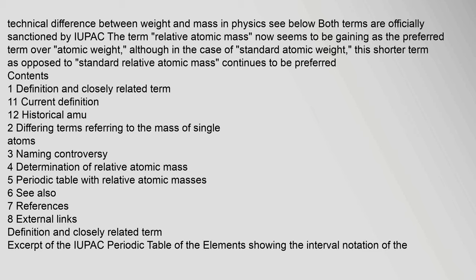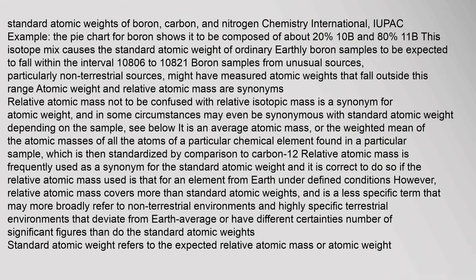Excerpt of the IUPAC periodic table of the elements showing the interval notation of the standard atomic weights of boron, carbon, and nitrogen. The pie chart for boron shows it to be composed of about 20% 10B and 80% 11B. This isotope mix causes the standard atomic weight of ordinary earthly boron samples to be expected to fall within the interval 10806 to 10821.